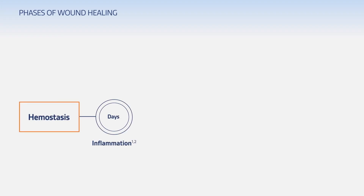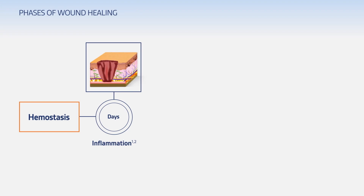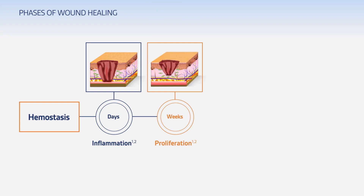After hemostasis, the initial phase is inflammation, which occurs in the first few days following creation of the wound. During this phase, the wound is cleared of debris by white blood cells. The inflammatory cells also release mediators to incite the next stage of wound healing, proliferation. During the proliferation phase, new collagen is deposited by fibroblasts, and we start to see a balance between the formation of a new extracellular matrix, or ECM, and degradation of the old damaged ECM.